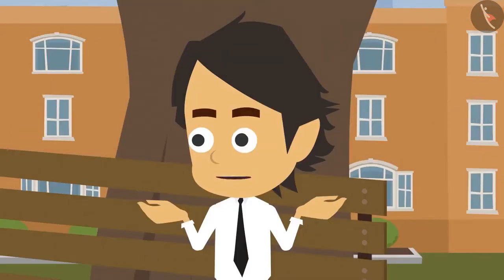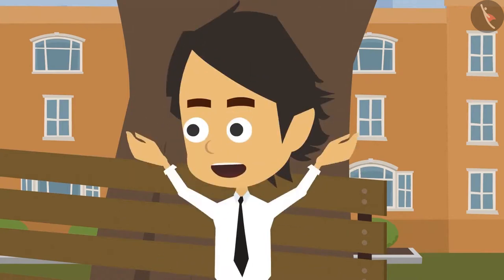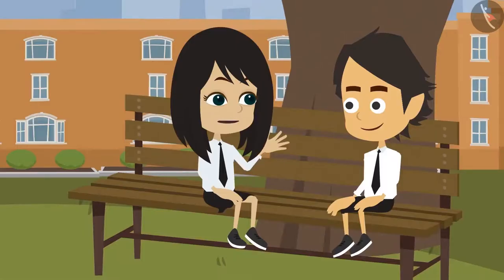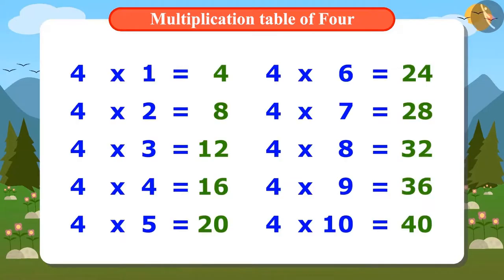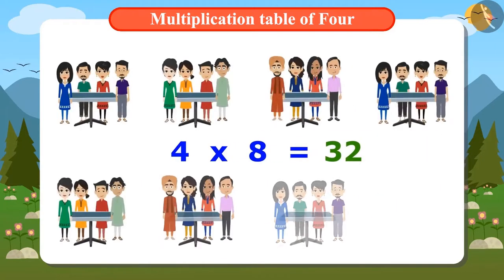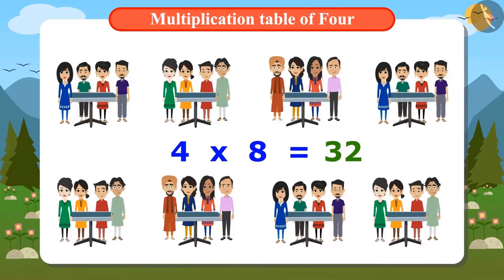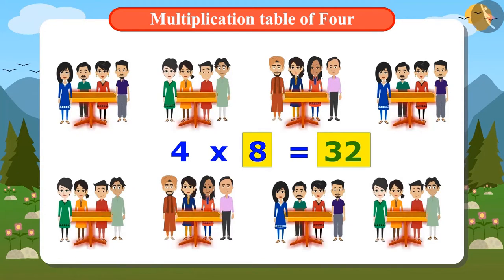But my problem hasn't been resolved. How many tables are needed for 32 guests? Hey, we already know it. Look, 32 comes in the multiplication table of 4 when we multiply 4 by 8. That means you need 8 tables. Oh yes, from this multiplication table, we can say that 8 tables can be used by 32 guests.